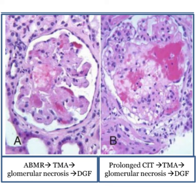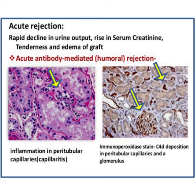Here you can see evidence of TMA, or thrombotic microangiopathy. By the way, TMA has many causes including CNI, ABMR, and many others. And finally, evidence of PTC in the first image and another one showing C4D deposition by immunoperoxidase.